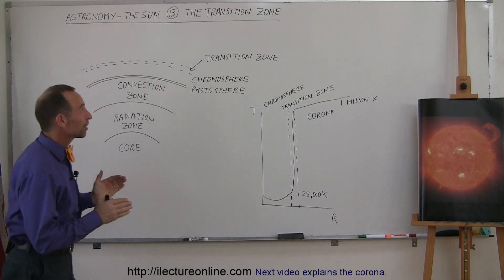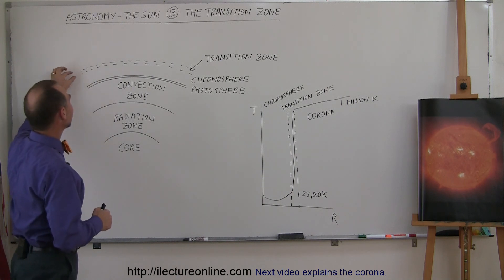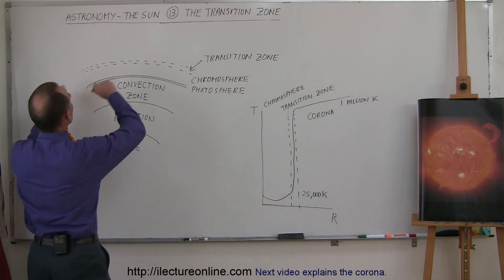Welcome to Electronline, and now we're going to talk about the transition zone. The transition zone is a very thin layer between the chromosphere and the corona. So let me put that up here.